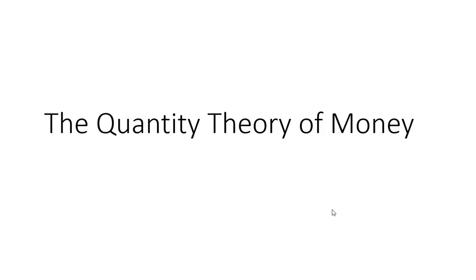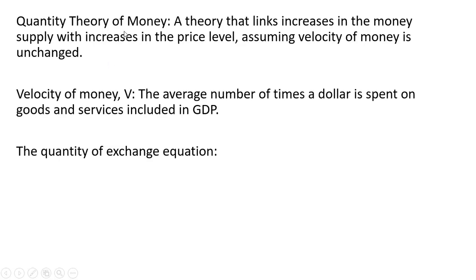Hello. In this video, we're going to look at the quantity theory of money. The quantity theory of money is a theory that links increases in the money supply with increases in the price level. It assumes that the velocity of money is constant or unchanged. The velocity of money is just the average number of times a dollar is spent on goods and services included in GDP.